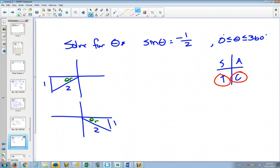And this is, if we are solving for this angle. Do we have one half as one of the values we have memorized? Yes. What was that angle? 30 degrees. So now, we know that this reference angle is 30 degrees here and 30 degrees there.